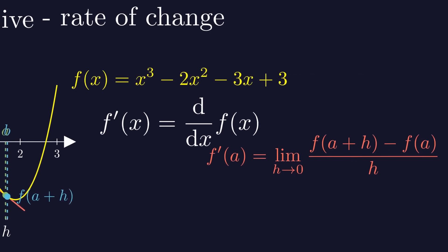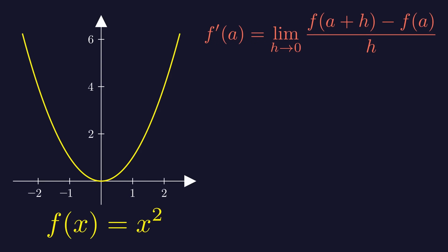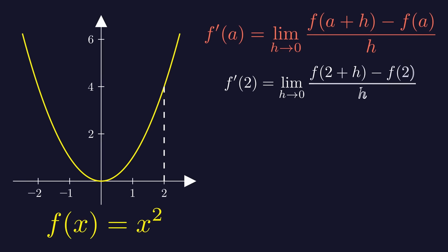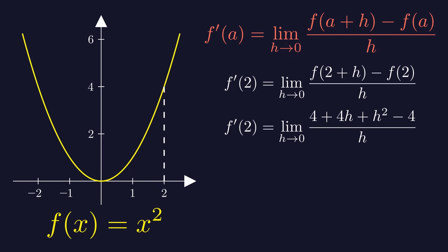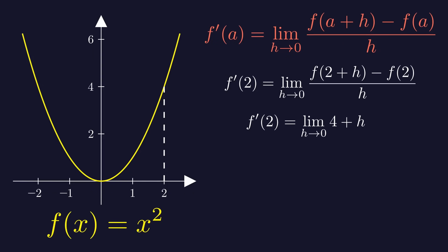To see how it works, let's look at a simpler function, for example f of x equals x squared. Let's calculate the derivative of this function at point a equal to 2. From the definition of a derivative, f prime of 2 is the limit as h approaches zero of f of 2 plus h minus f of 2 divided by h. That is equal to the limit of 4 plus 4h plus h squared minus 4 divided by h. And after simplifying, that is equal to 4 plus h. As h approaches zero, this is just equal to 4. So the value of the derivative at a equal to 2 is 4.